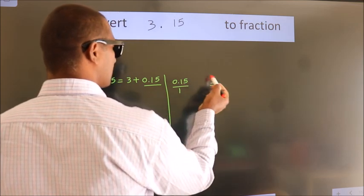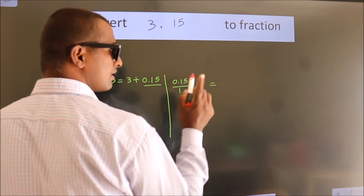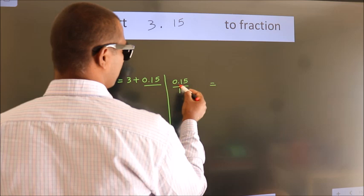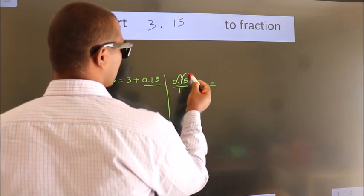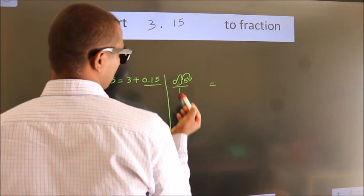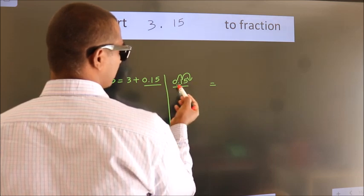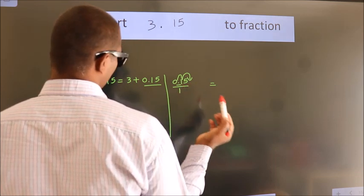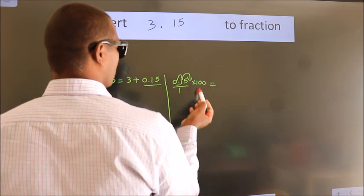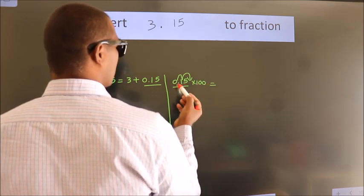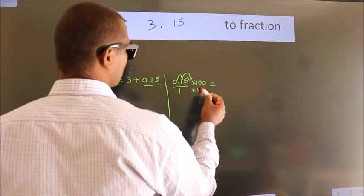To convert this to a fraction, we have to move the decimal two places. For that, multiply it by 100. Whatever you are multiplying in the numerator, in the denominator also do the same.